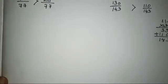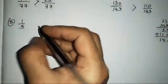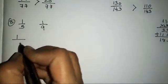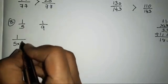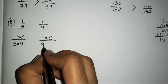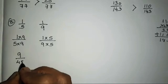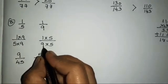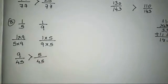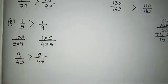The eighth sum is 1 upon 5 and 1 upon 9. We equalize denominators by multiplying 1/5 by 9 and 1/9 by 5. So 1 nine is 9 over 5 nines 45, and 1 five is 5 over 9 fives 45. Which numerator is greater? 9 is greater, so the first fraction 1/5 is greater.